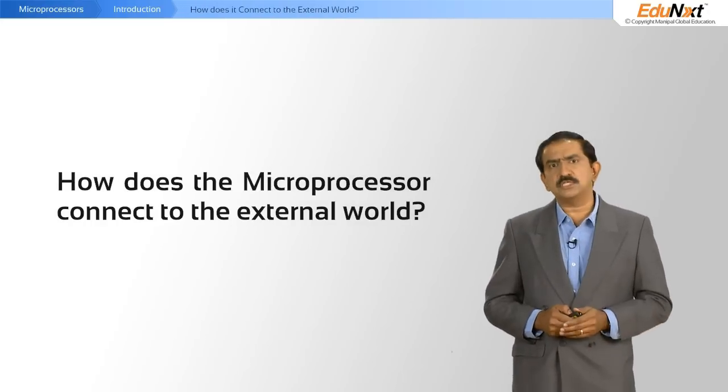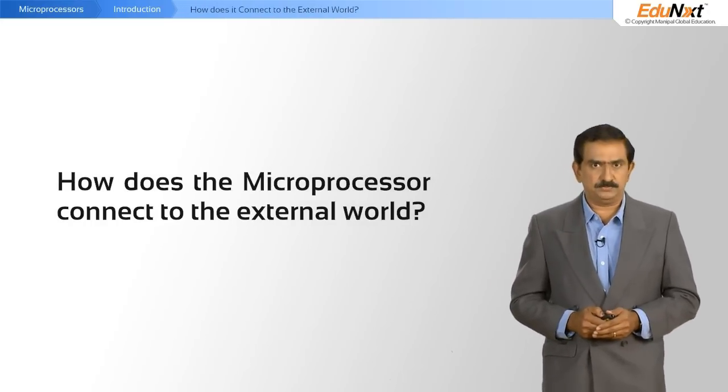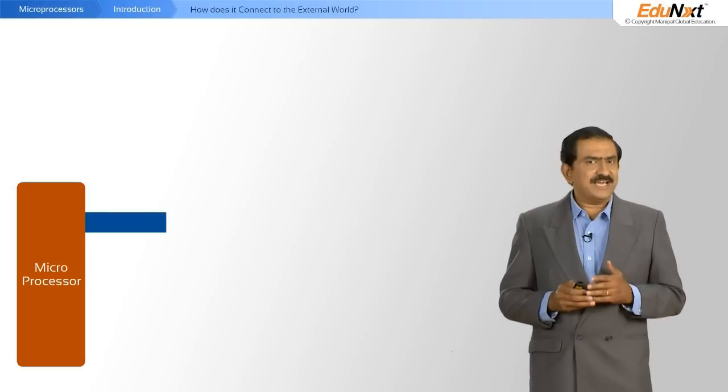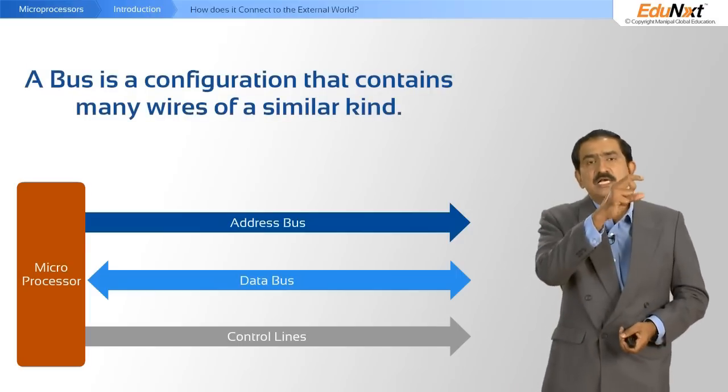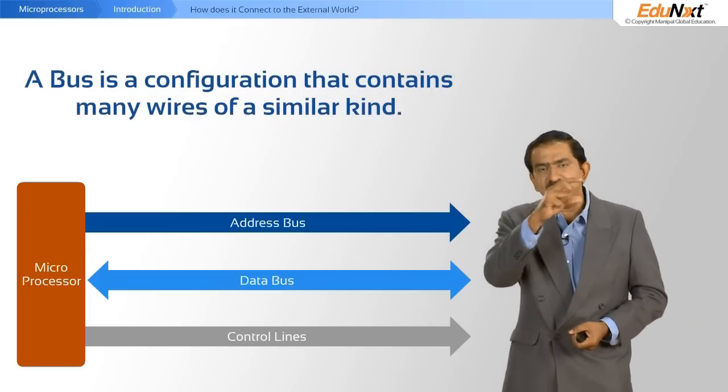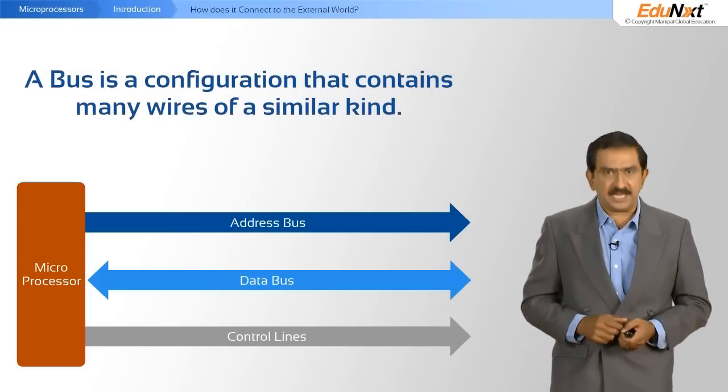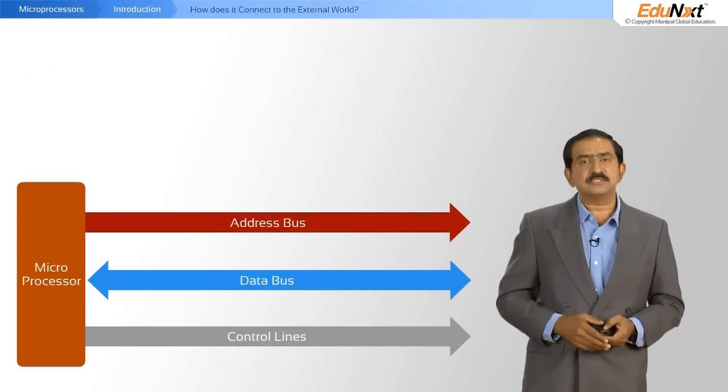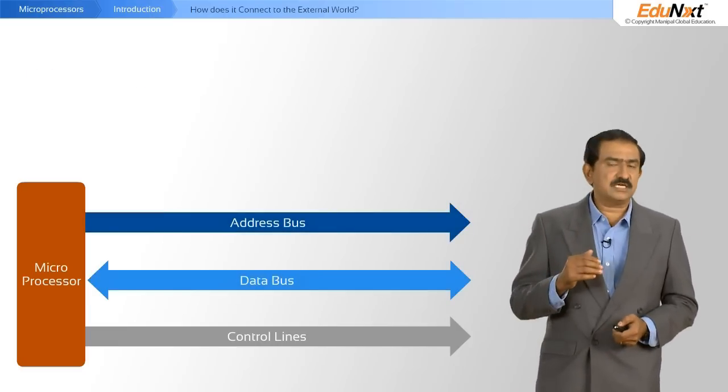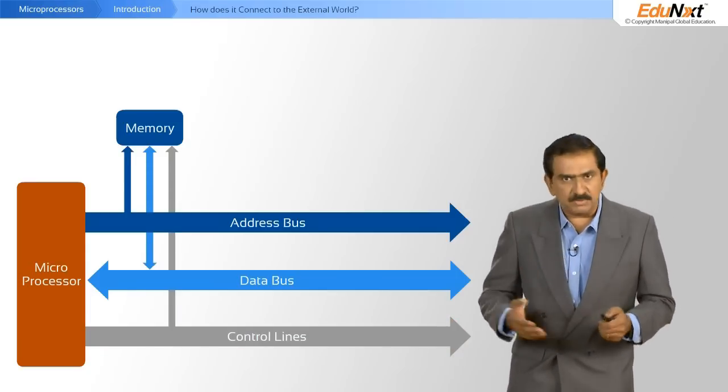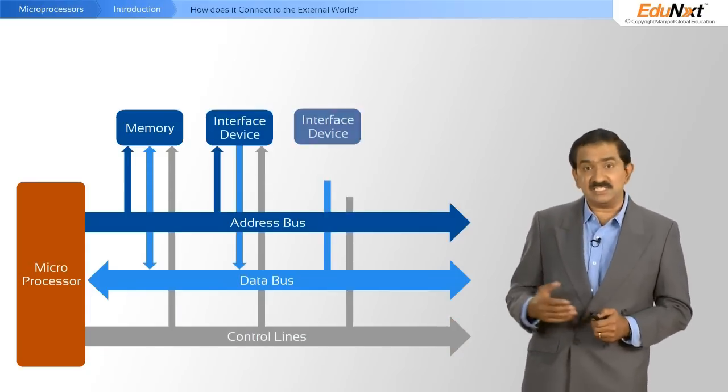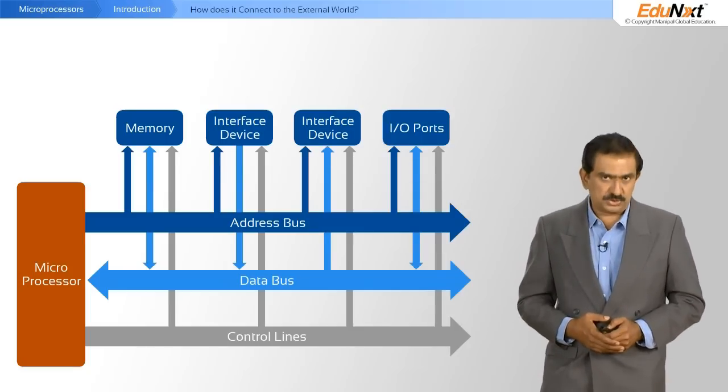So how does the processor connect to the external world? Very simple. It has three kinds of buses that come out. A bus is a configuration that contains many wires of a similar kind. So you've got the address bus, data bus, and a control bus. Each of these are connected to either memory devices, to various interface devices, or to I-O ports.